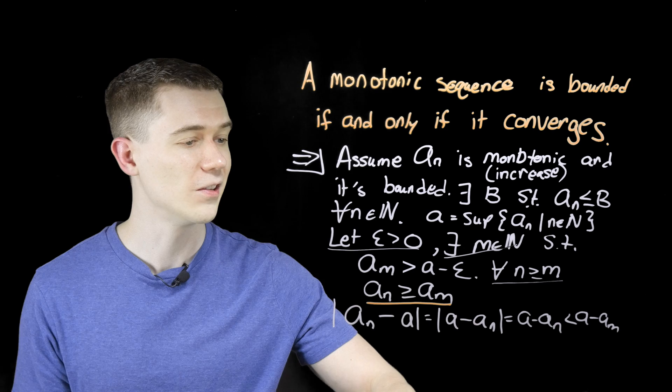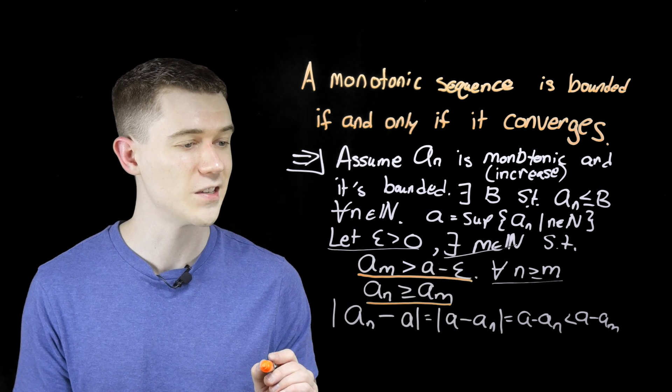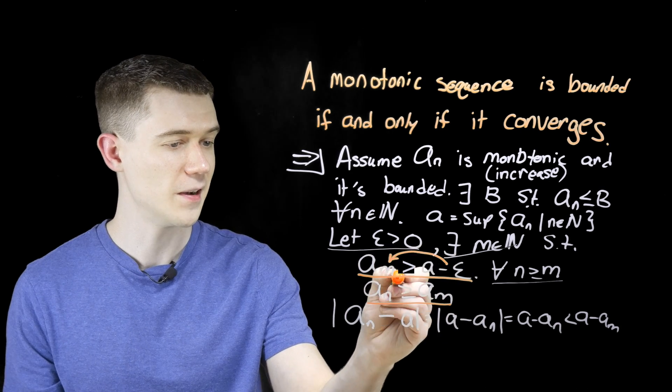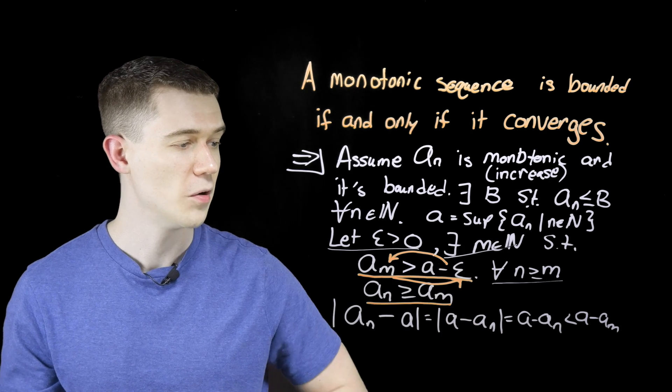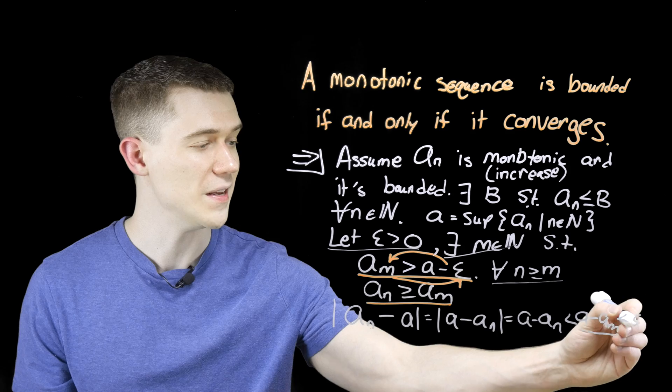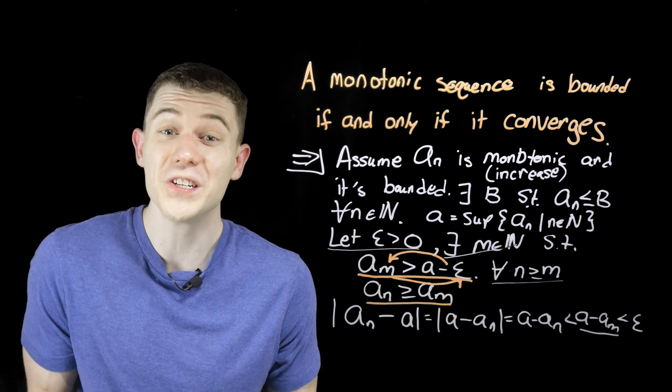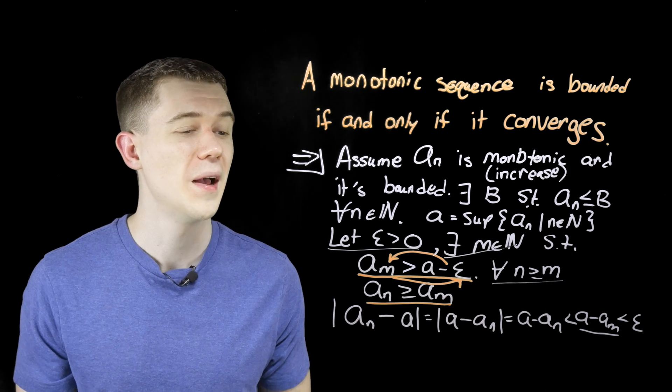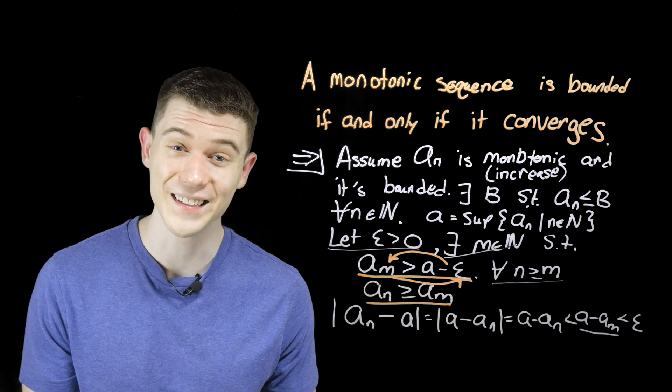Well, take a look right here. If we just rearrange that by adding epsilon and subtracting a sub m, we're exactly getting right here, a minus a sub m being less than epsilon, which completes that part of the proof that this is a convergent sequence. Very nice,